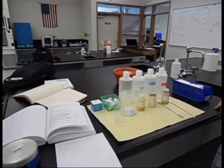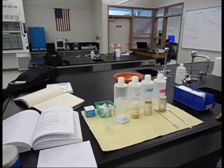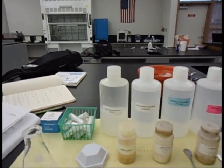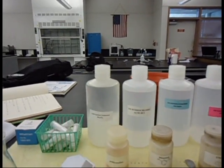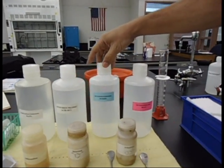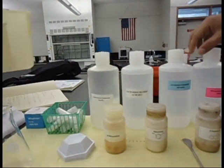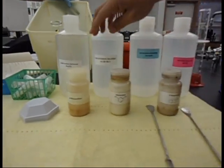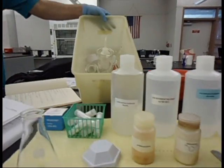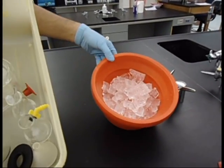This lab is the preparation of para red and related azo dyes. Our equipment includes sodium carbonate, one molar hydrochloric acid, one molar sodium hydroxide, three molar hydrochloric acid, p-nitroanilin, resorcinol, 2-naphthol, and related glassware, an ice bath, and a hot plate with a stir bar.